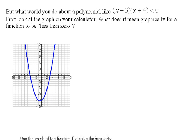Now we're going to move up a step and start looking at polynomial inequalities. To ease us into this, let's start by looking at a graph and seeing exactly what's going on. In this problem, we've got x minus 3 times x plus 4 is less than 0.